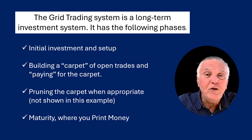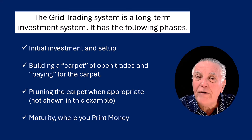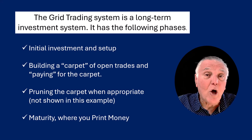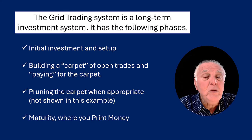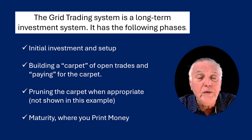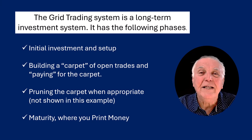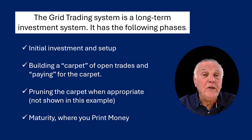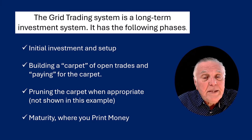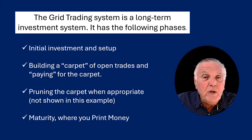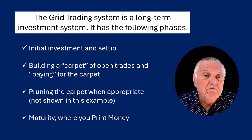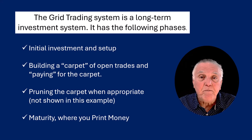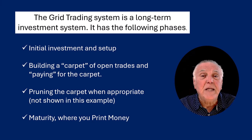You start building what I call a carpet of open trades — that's my own personal expression for the region containing open buys and open sells. You might have 10 open buys and 10 open sells. The whole idea is not to pay for that carpet yourself but to finance it out of gains you make while grid trading. Once the carpet is established, you prune it to avoid overexposure to open trades.